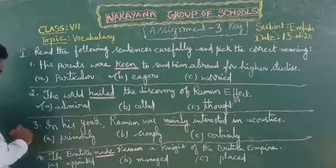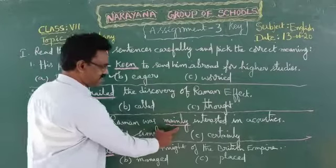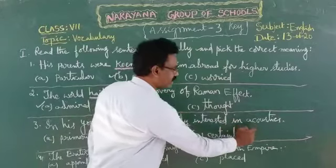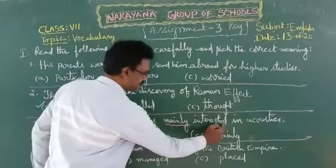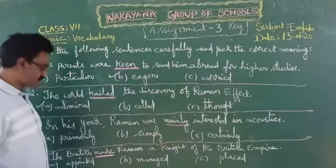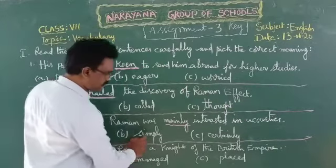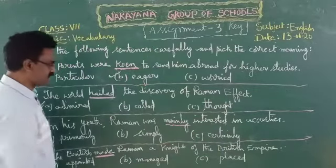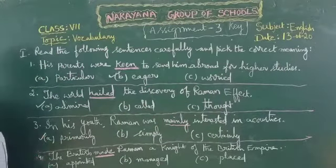Now let us see the third question: In his youth, Raman was mainly interested in acoustics. The word 'mainly' is underlined. Three options are given — Option A: primarily, Option B: simply, Option C: certainly. 'Mainly' means 'primarily,' so Option A is the correct answer.